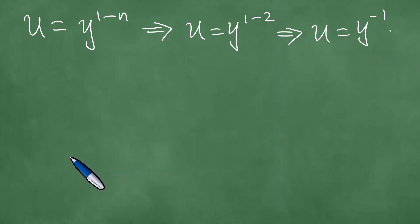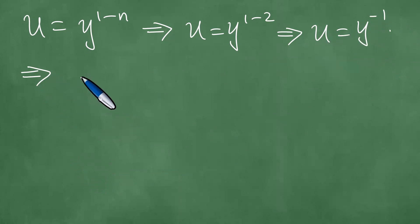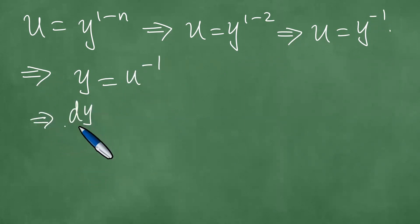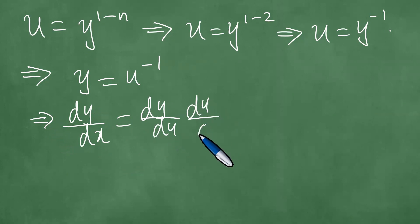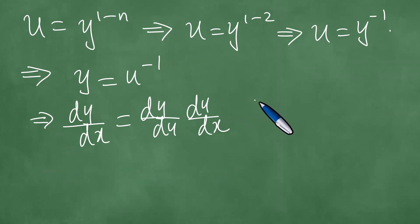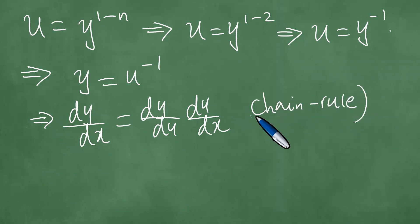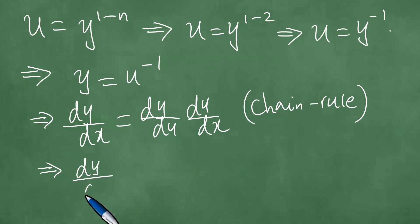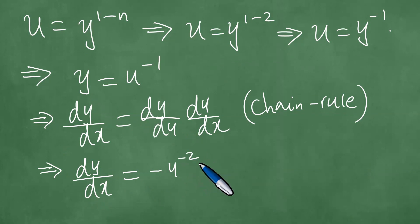We differentiate this. Before we differentiate, we make y the subject of the equation and write y equals u to the power minus 1. Then we can get dy/dx, which by the chain rule equals dy/du times du/dx. So dy/dx equals minus u to the minus 2 times du/dx.